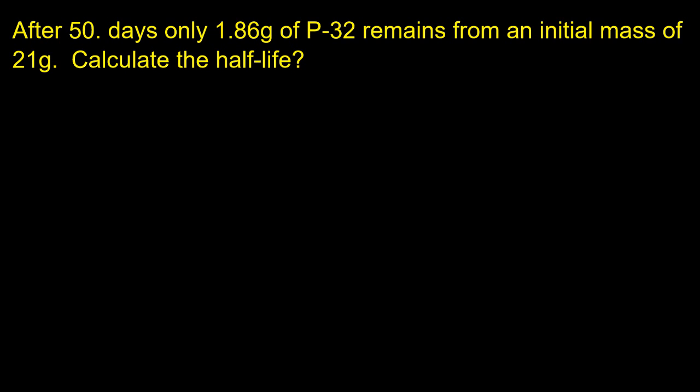So a second question. After 50 days, only 1.8 grams of phosphorus 32 remains from an initial mass of 21 grams. What is the half-life? Well, looking at the numbers again, 50 is going to be T, that's the time. N is 1.86 grams, and N sub 0 is the 21 grams. So if I've got N and N sub 0, I'm probably going to have to use that longer equation first.